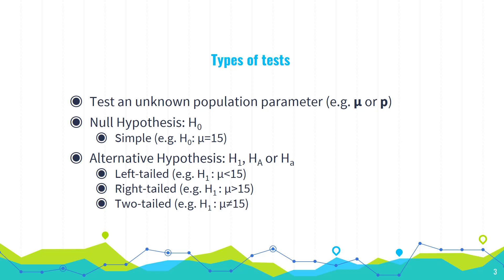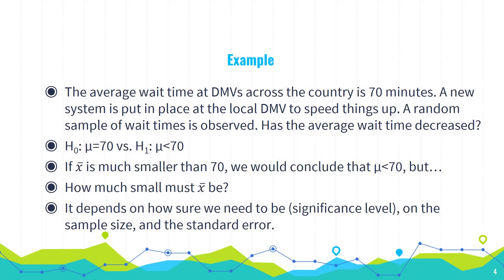Let's take a look at an example. The average wait time at DMVs across the country is 70 minutes. A new system is put in place at the local DMV where they're trying to speed things up. A random sample of wait times is observed, and we want to determine from this sample: can we conclude that the true average wait time at this DMV has decreased? In this case, the null hypothesis is that really nothing's changed — the mean is still equal to 70. Because we're testing the claim that the wait time has decreased, the alternative is going to be that mu is less than 70.